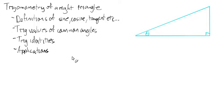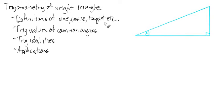So now we're going to go into 4.3 — we're skipping 4.2 for a little bit, we'll come back. So 4.3, we're going to talk about the definitions of sine, cosine, and tangent. We'll start with that.